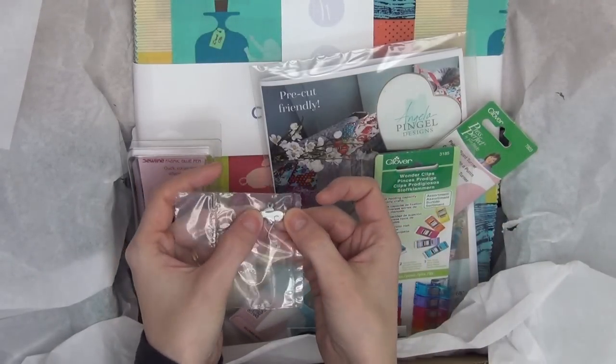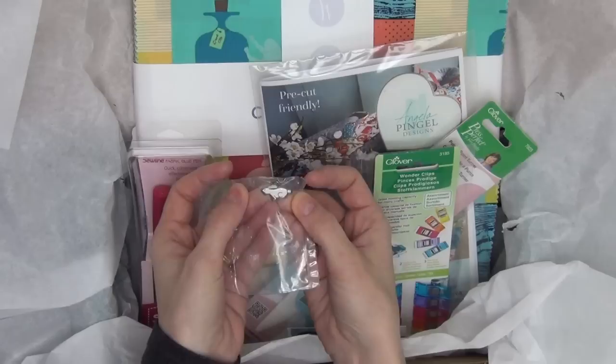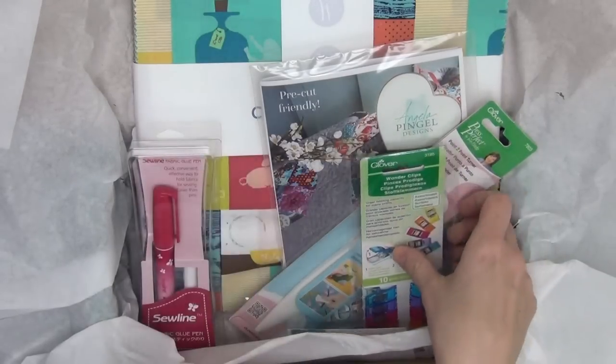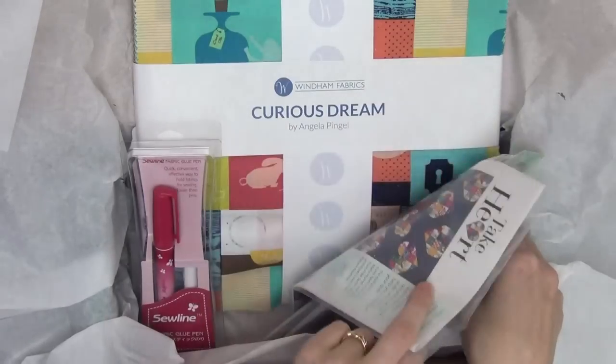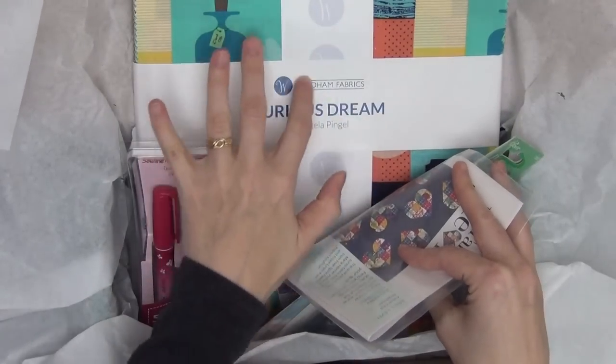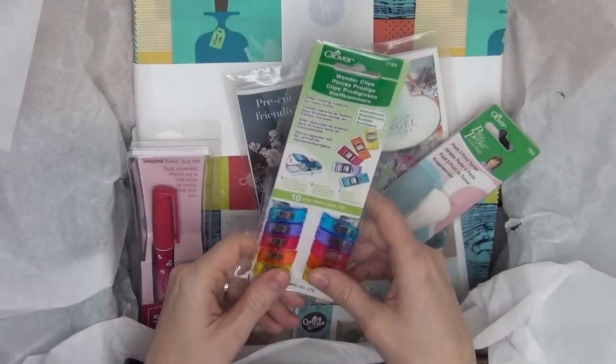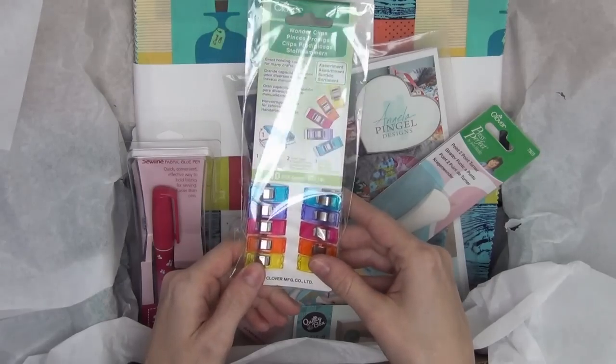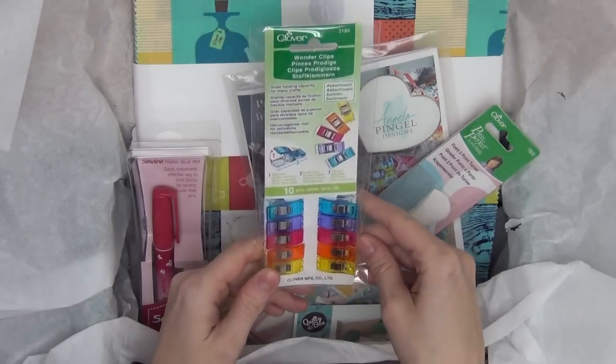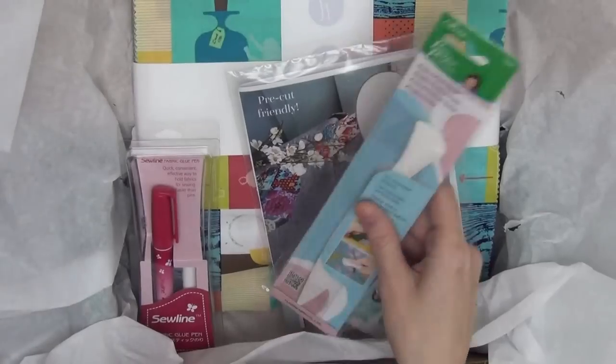This one is so cute. It's a little white rabbit charm and that's kind of the theme of Angela's fabric line, Curious Dream. It's all about the white rabbit and Alice in Wonderland. So I think that's really cute. We've got a new pack of Wonder Clips. I'm so happy. I absolutely love Wonder Clips. I can't get enough.